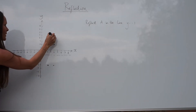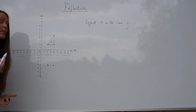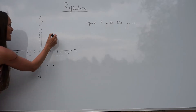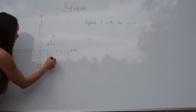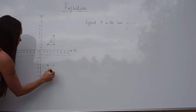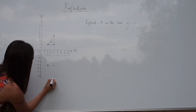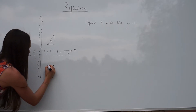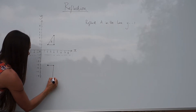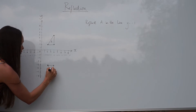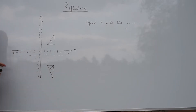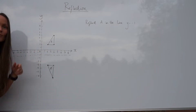Lastly, the point up here is six units from the mirror line, so you have to count six units away: one, two, three, four, five, six — it takes you all the way down there. Then you join up the points, and that is the image of A. We have reflected triangle A in the mirror line y equals negative one.